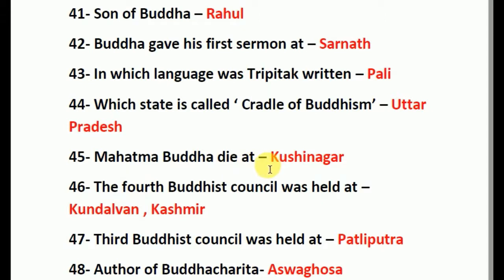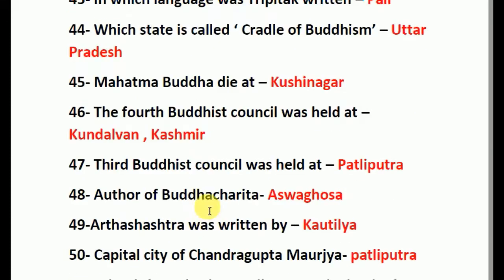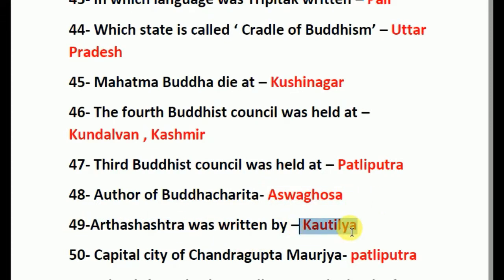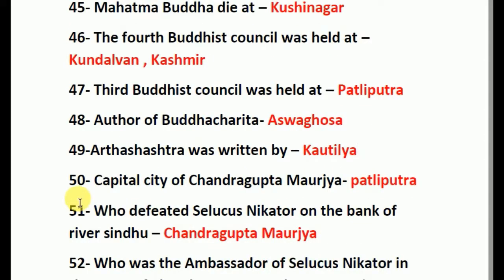Mahatma Buddha died at Kushinagar. The fourth Buddhist council was held at Kundalavana in Kashmir. The third Buddhist council was held at Pataliputra. Author of Buddha Charita: the answer is Ashvaghosha. Arthashastra was written by Kautilya. Question number 50.